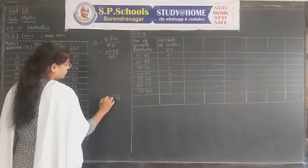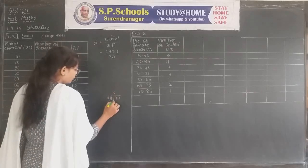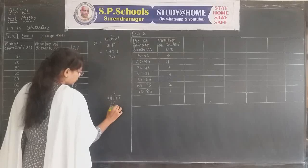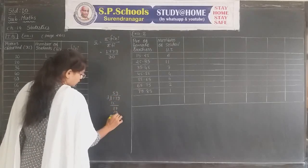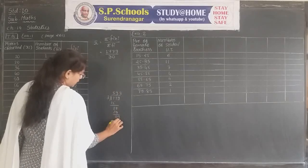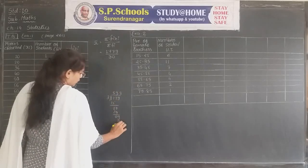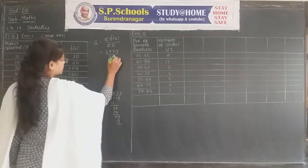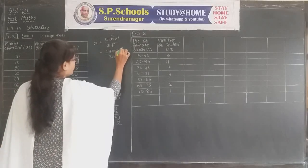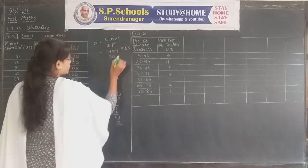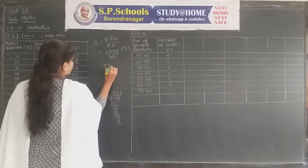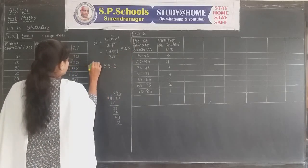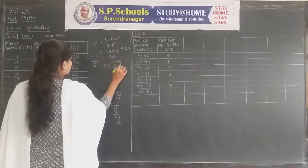1779 divided by 3 gives 593, and 30 divided by 3 gives 10. So it is 593 divided by 10, which is 59.3. 59.3 is the mean of the given data.